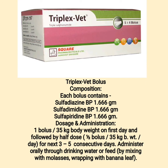Triplex fed bolus — composition: each bolus contains sulfadiazine BP 1.666 g, sulfadimidine BP 1.666 g, sulfapyridine BP 1.666 g. Dosage and administration: 1 bolus per 35 kg body weight on first day, followed by half dose, 1.5 bolus per 35 kg body weight per day, for next 3 to 5 consecutive days. Administer orally through drinking water or feed, by mixing with molasses or wrapping with banana leaf.